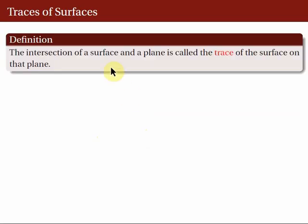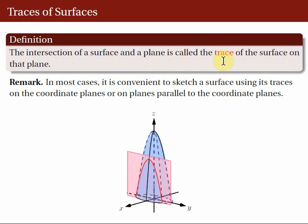What are traces of surfaces? The intersection of a surface and a plane is called the trace of the surface on that plane. In this figure, the trace is represented by the red curve — it is the intersection of the surface colored blue with the plane colored red. In most cases, it is convenient to sketch a surface using its traces on the coordinate planes or on planes parallel to the coordinate planes. Traces are especially useful in the discussion on quadratic surfaces.